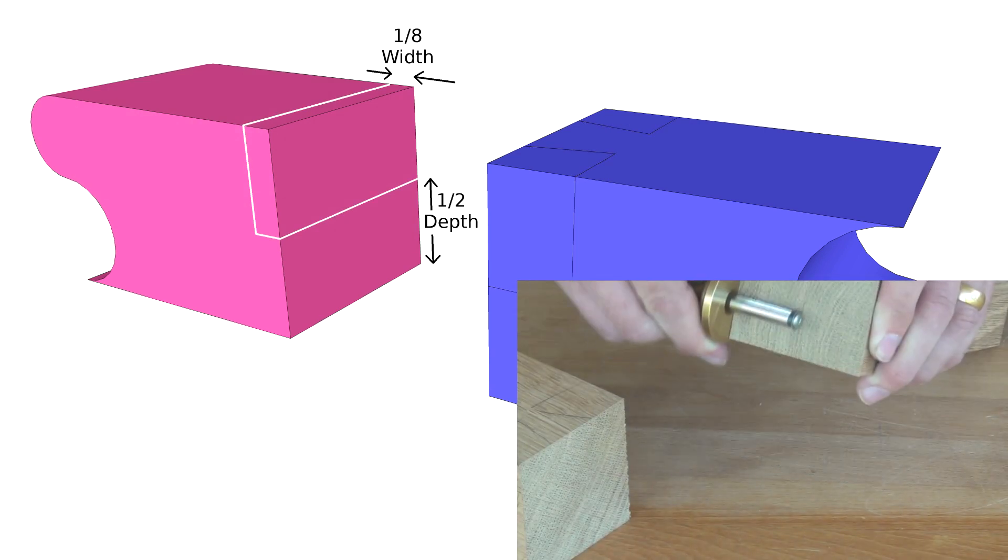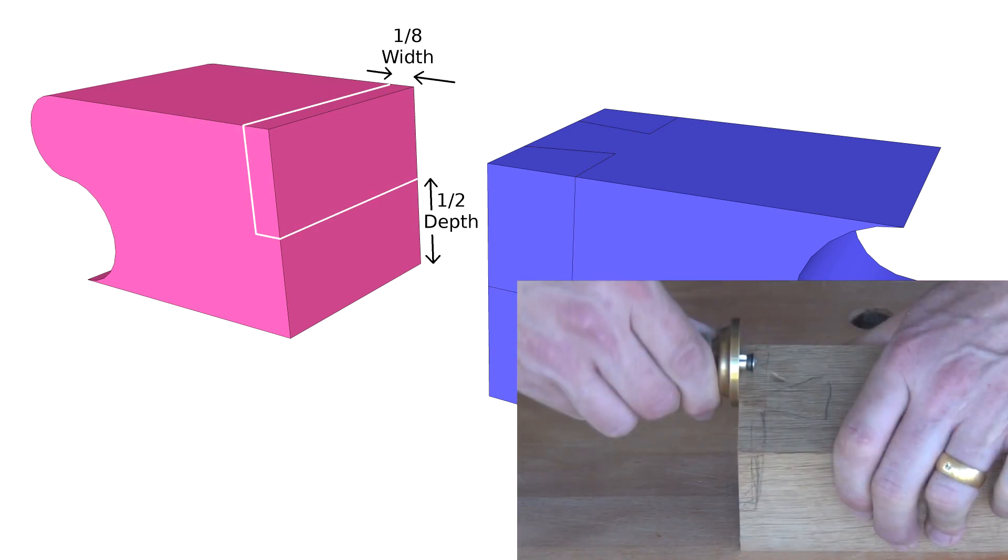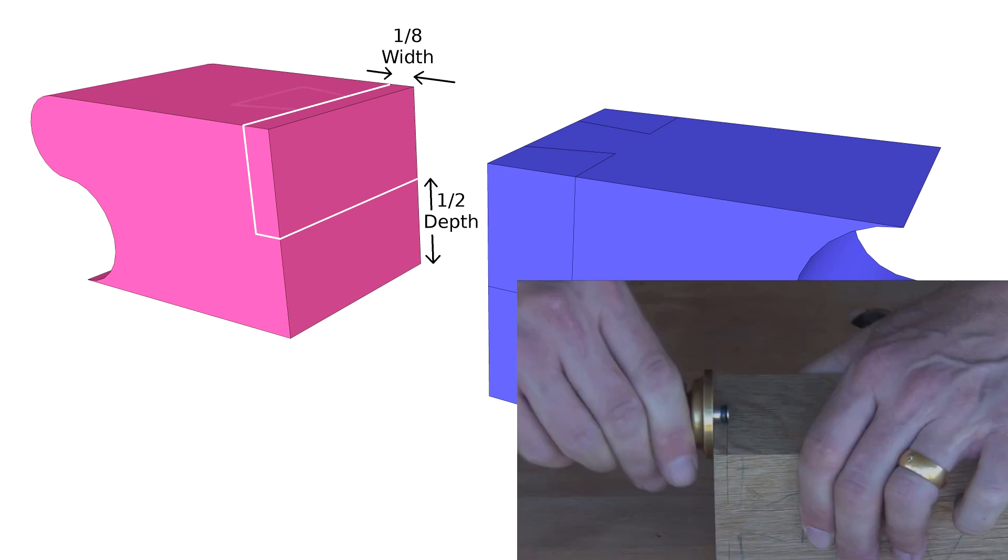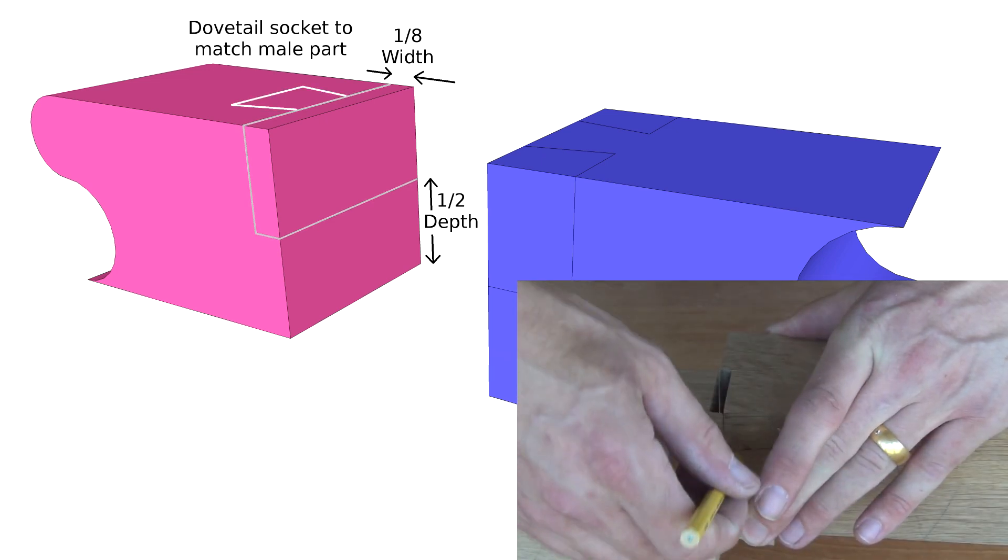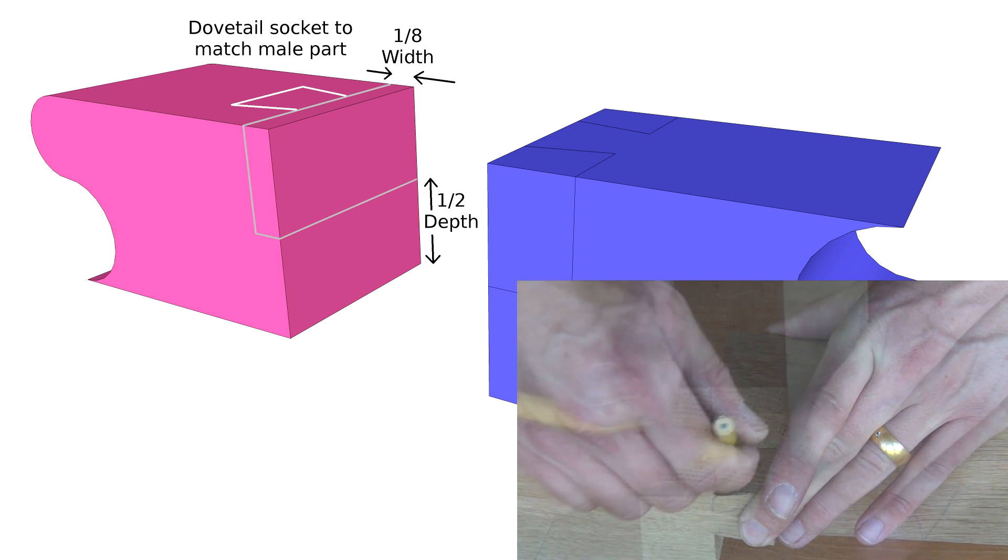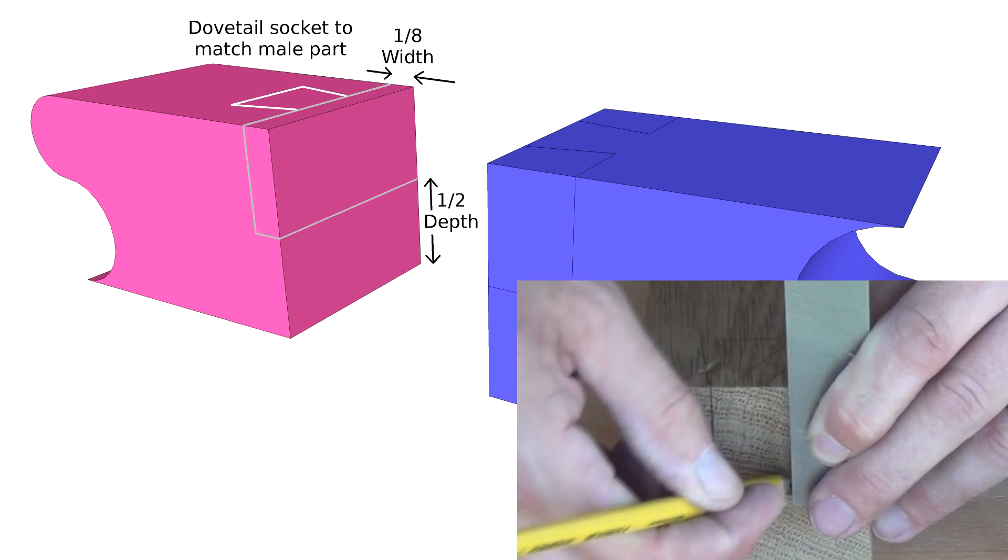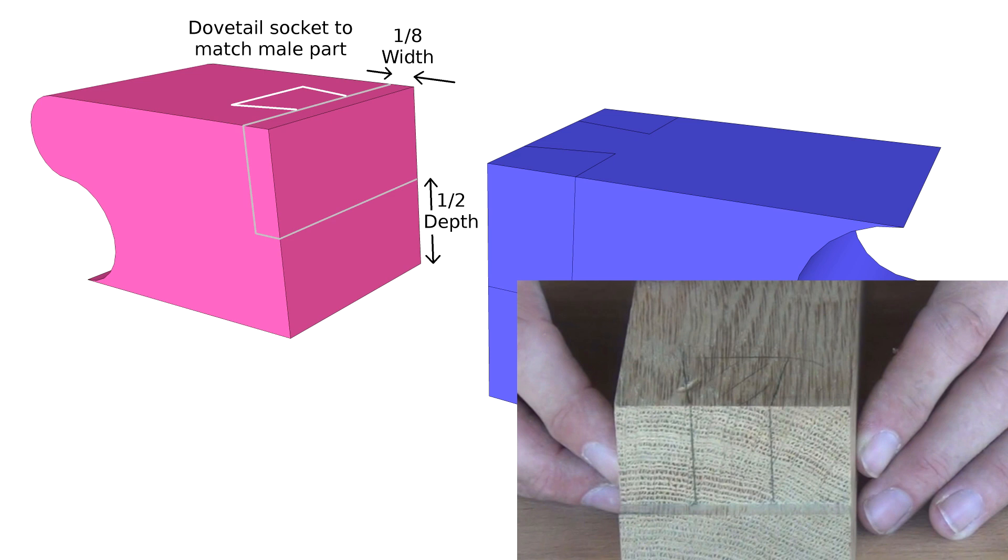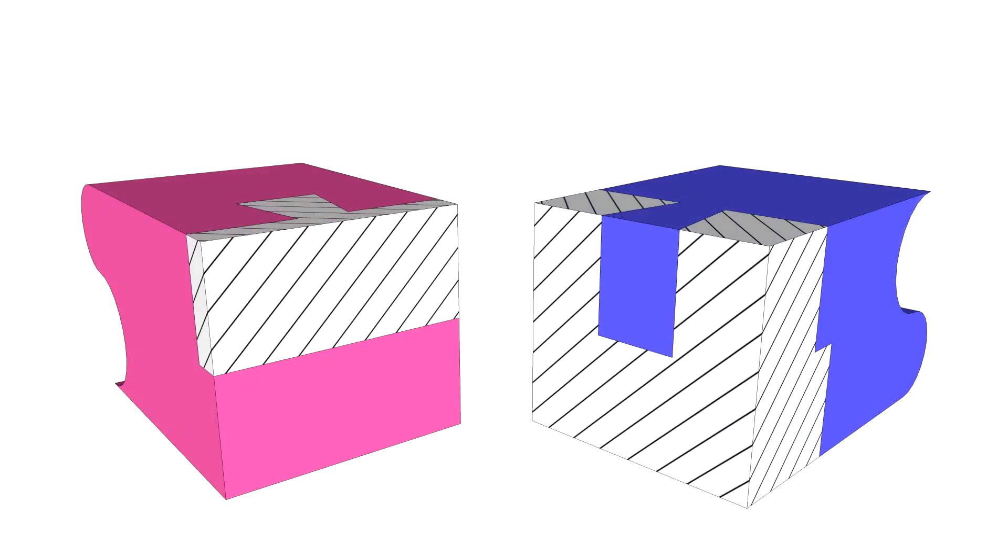The female side also receives a rebate at half depth, but this time just an eighth of the width in width itself. And the dovetail should be marked from the male part, with perpendicular lines drawn in once the rebate has been removed. To avoid confusion, remember to mark the waste on both parts of the joint.